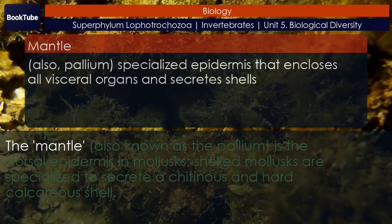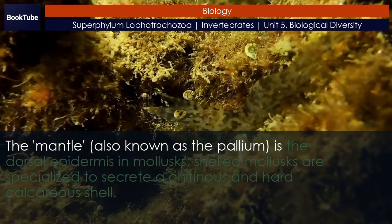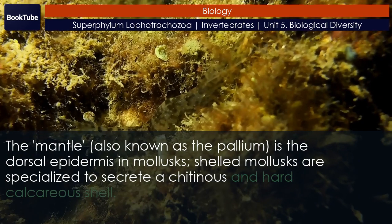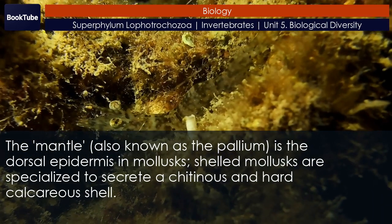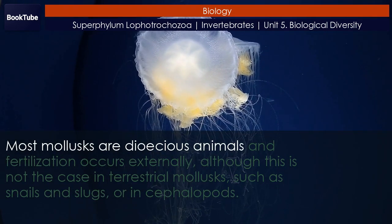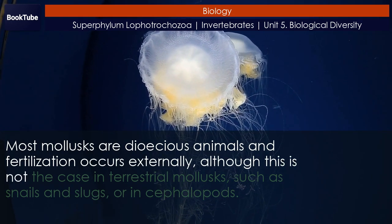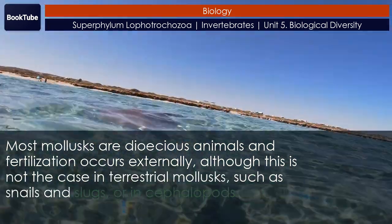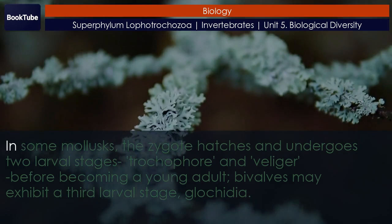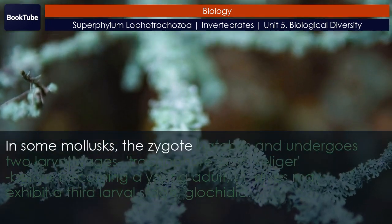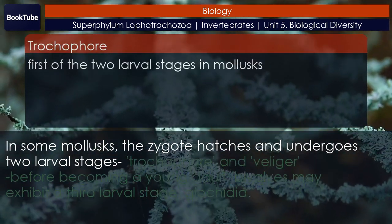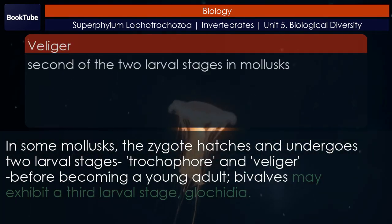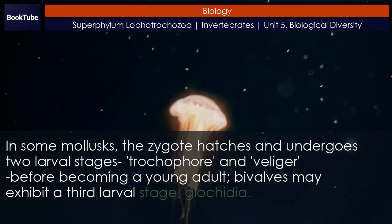Most mollusks are dioecious animals and fertilization occurs externally, although this is not the case in terrestrial mollusks such as snails and slugs, or cephalopods. In some mollusks, the zygote hatches and undergoes two larval stages — trochophore and veliger — before becoming a young adult. Bivalves may exhibit a third larval stage called glochidia.